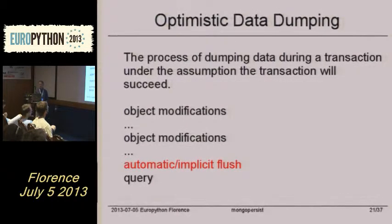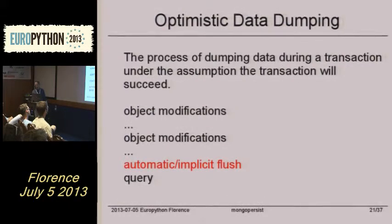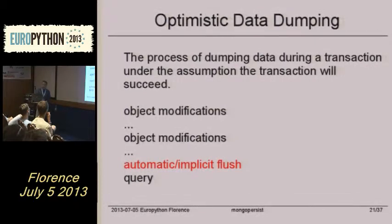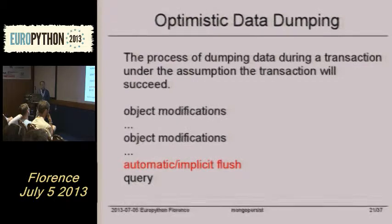Now we are coming to optimistic data dumping, which is the process of dumping data during the transaction under the assumption the transaction will succeed. The problem was that we are doing modifications to objects during a request, and usually after some point we need to do a query of MongoDB data. I have a sample in the next slide, and this query needs to access the modified data.